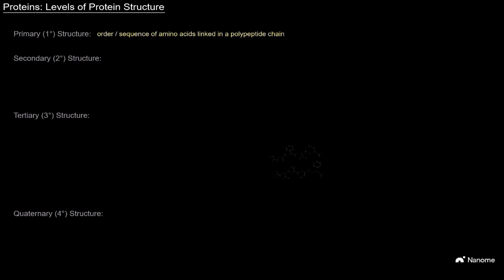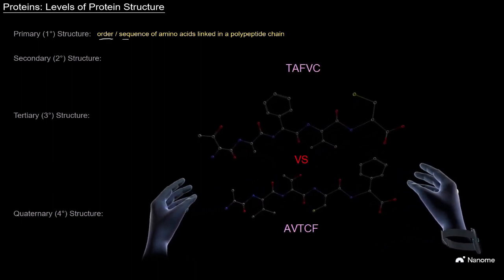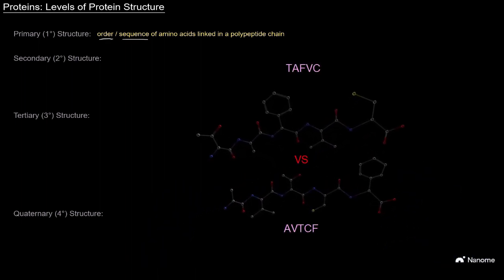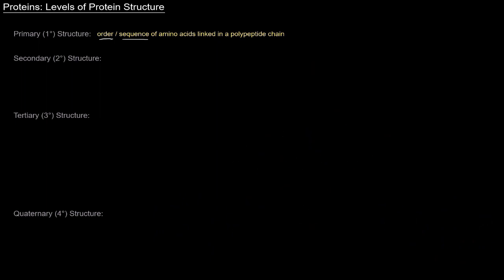So primary structure refers specifically to the order or to the sequence of amino acids that are linked in the polypeptide chain. It's not just about which amino acids are there, but the actual order in which they're connected. That's what primary structure refers to.